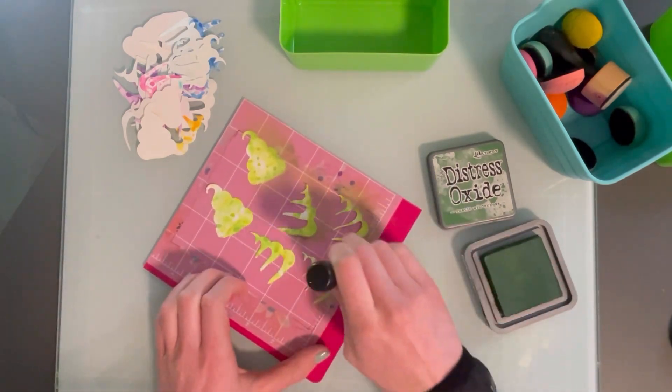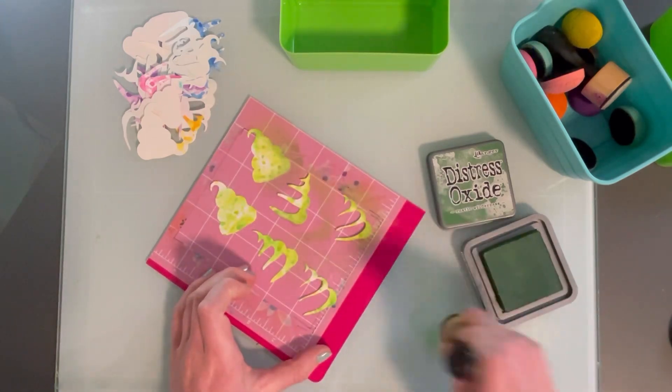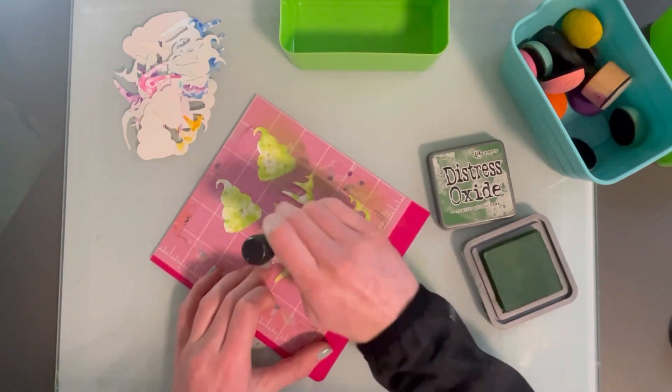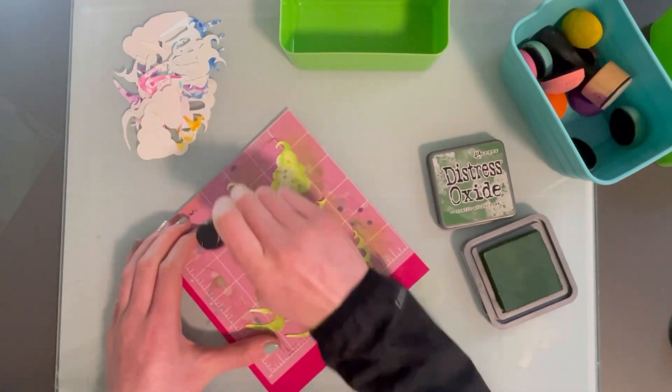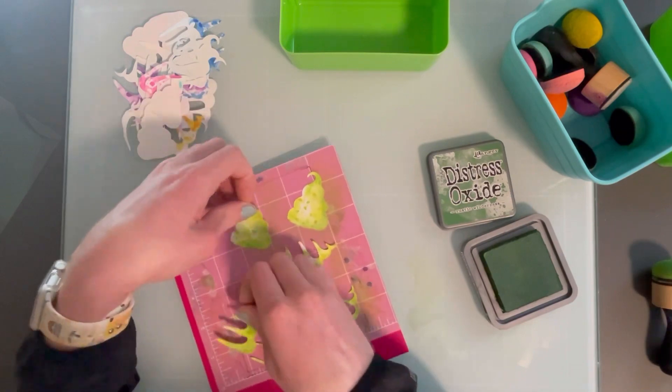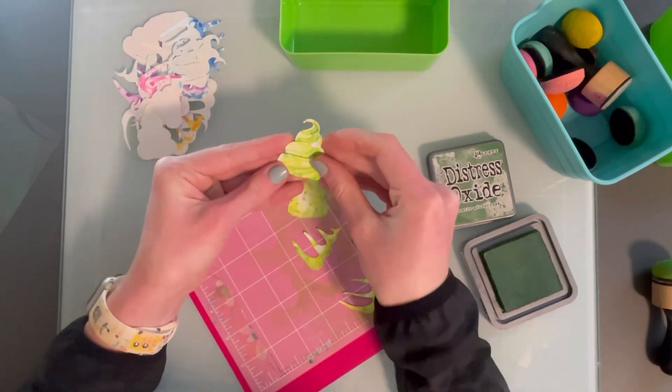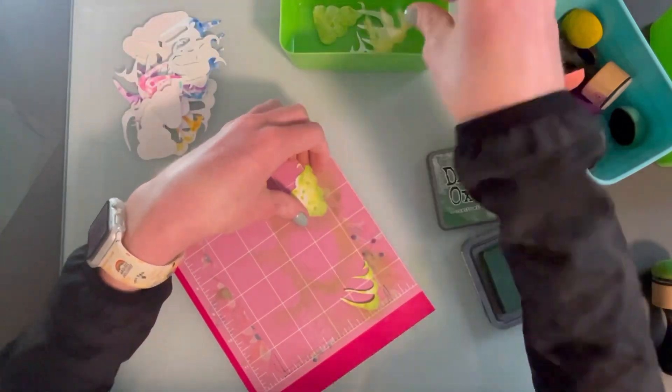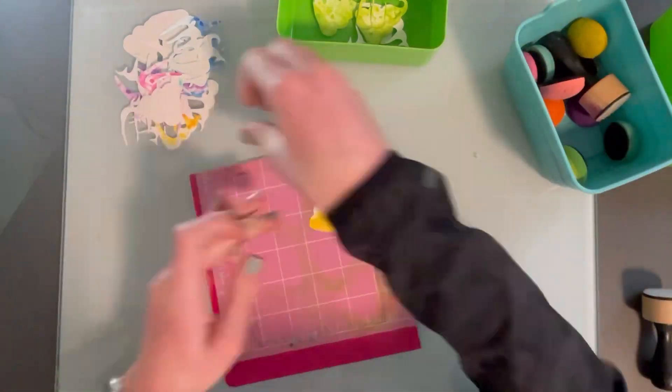So kind of the right corner-ish of each of these die cuts. And I just went in with some different colors of Distress Oxide ink to give them a little bit of dimension. In the big picture, I probably didn't need to ink blend these. I think it would have been fine without the ink blending, but I decided to ink blend it anyway because I thought it would help just differentiate each of these layers. But I don't think it did a lot in the grand scheme of things, so you could probably skip this step.